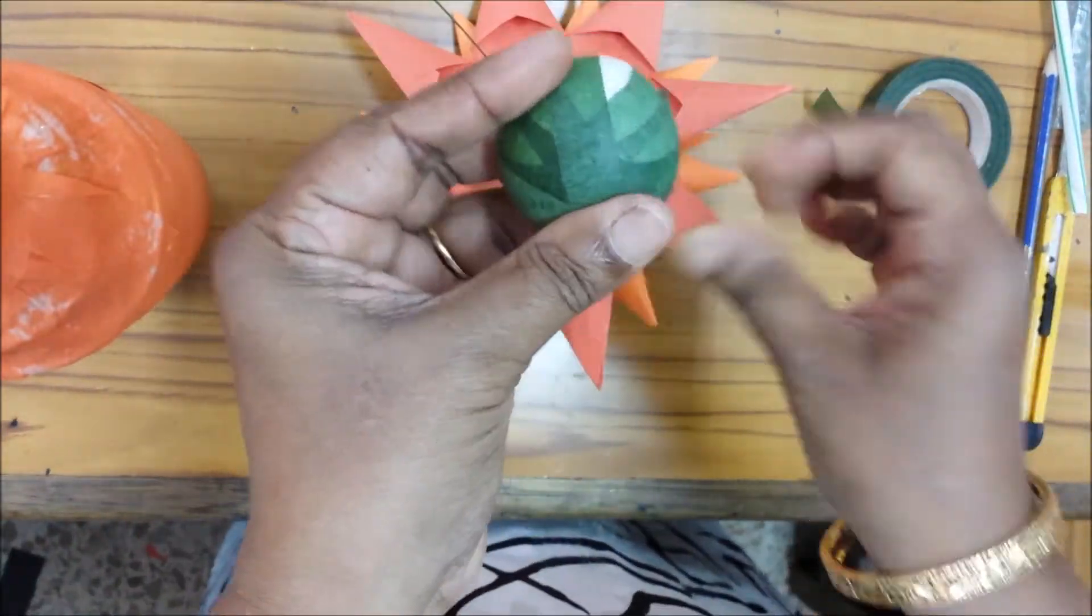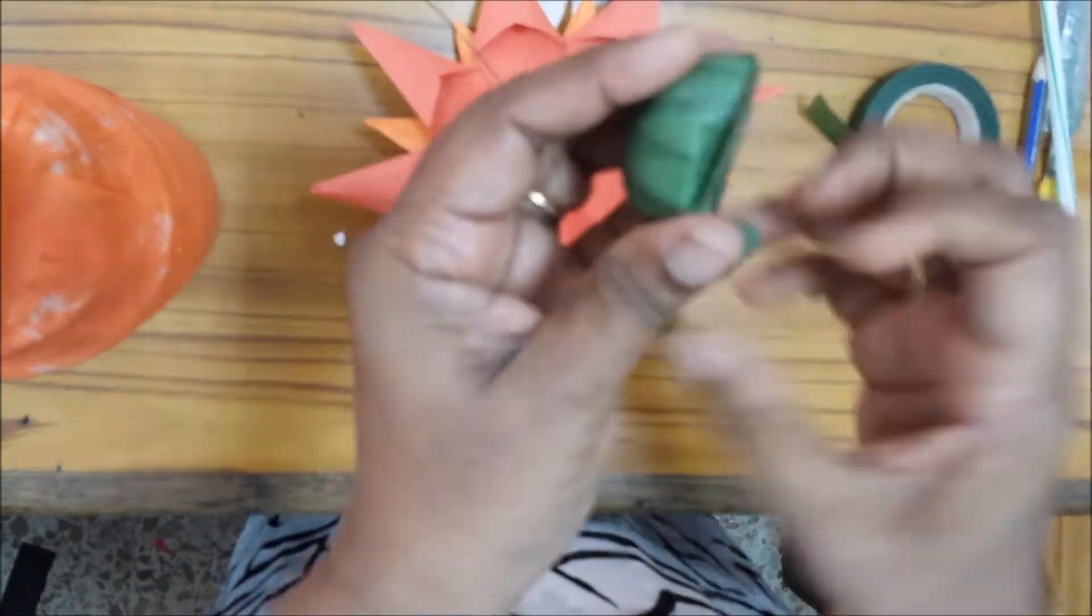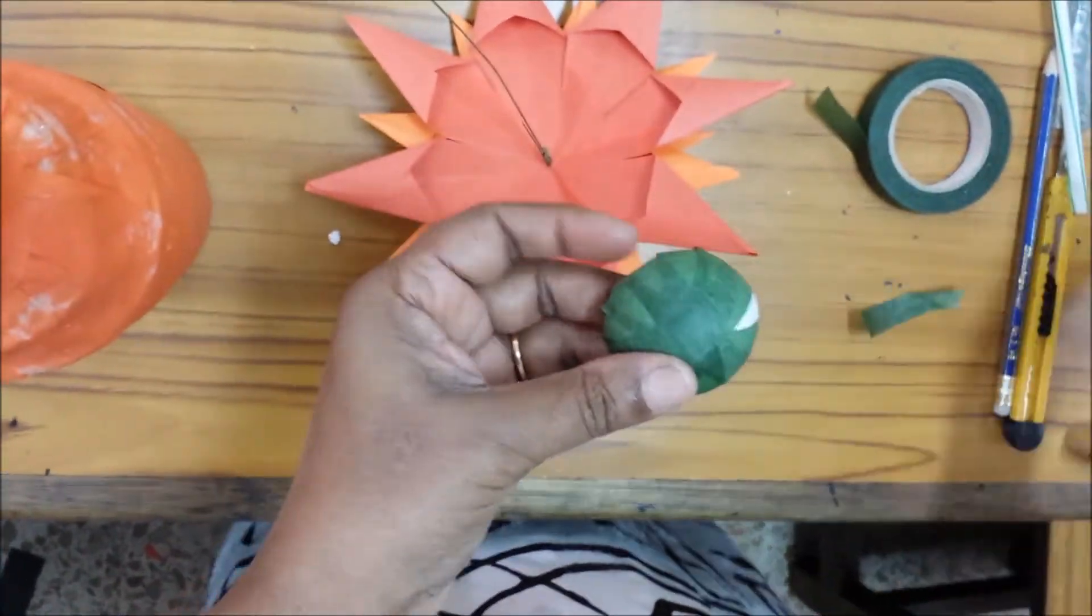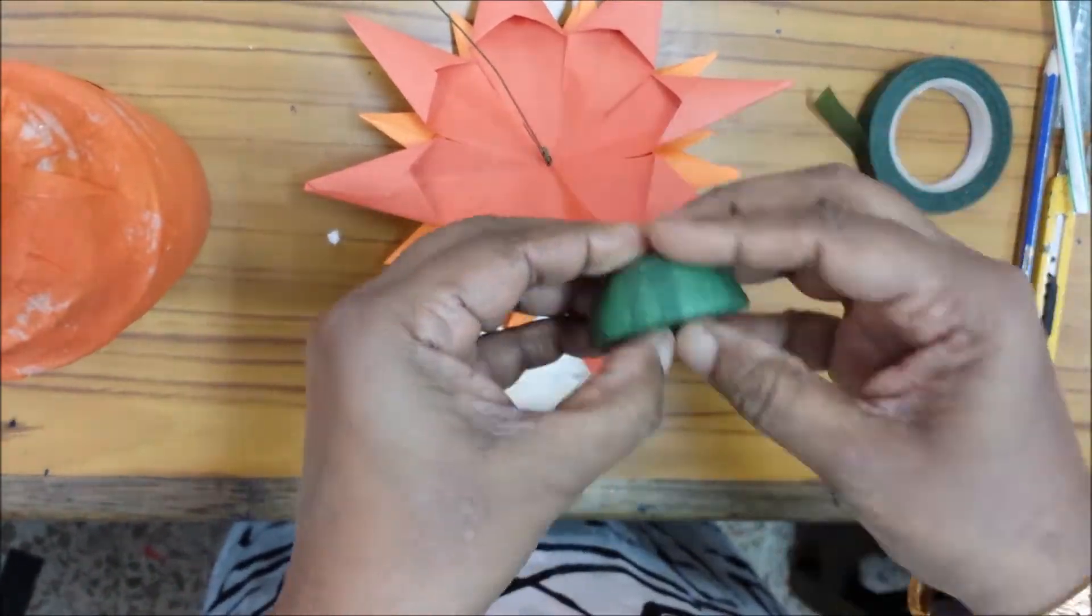it. Make the hole in the thermocol ball, and this already ready flower, you know that wire, you just prick it in this.